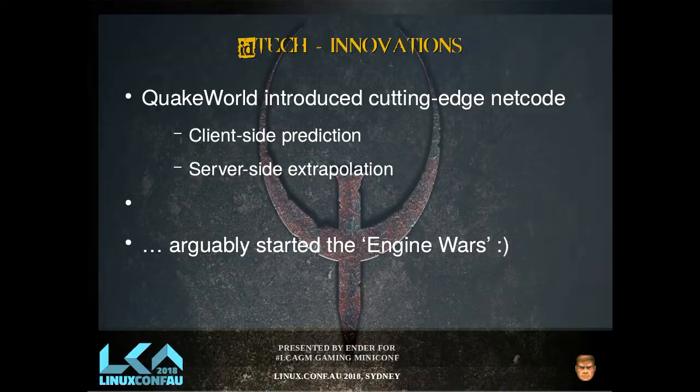QuakeWorld introduced cutting-edge netcode — things we're still doing today: client-side prediction and server-side extrapolation. It had dedicated multiplayer maps and was arguably the first game to have dedicated deathmatch maps. It started with the assumption that single-player is the way to go, putting some IPX networking in Doom that no one would ever use. Then LAN parties started. QuakeWorld developed that further, adding things like prediction to allow you to play on laggier connections.